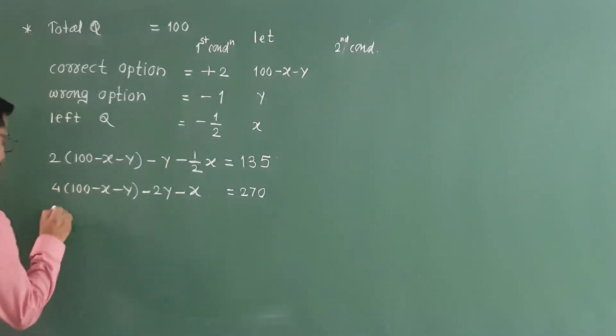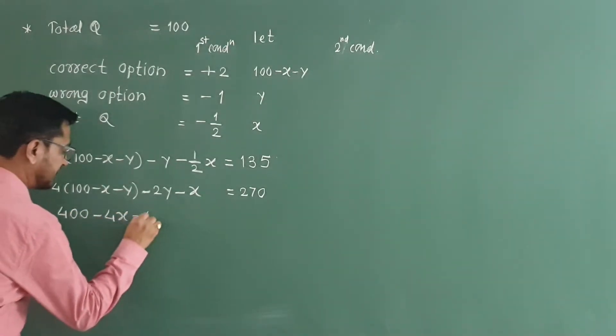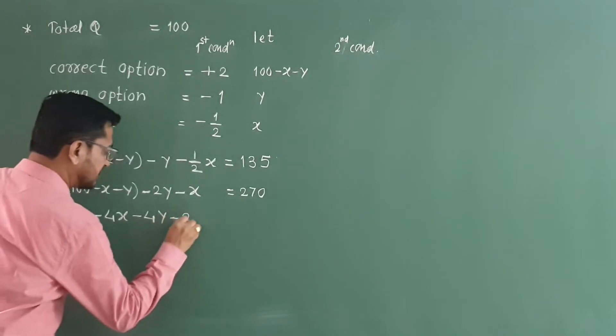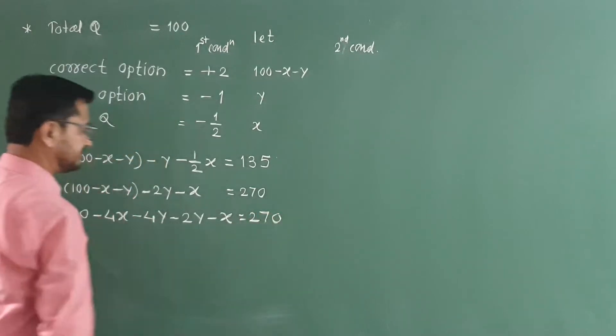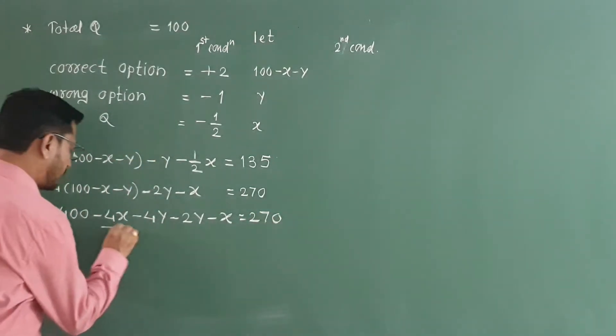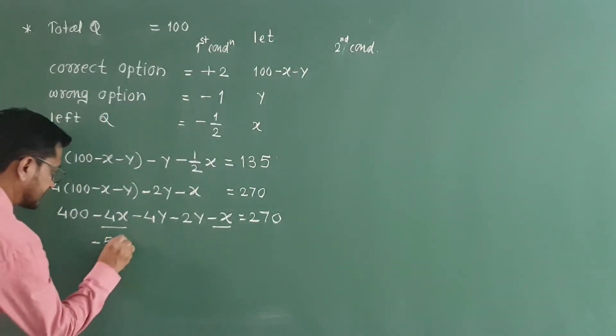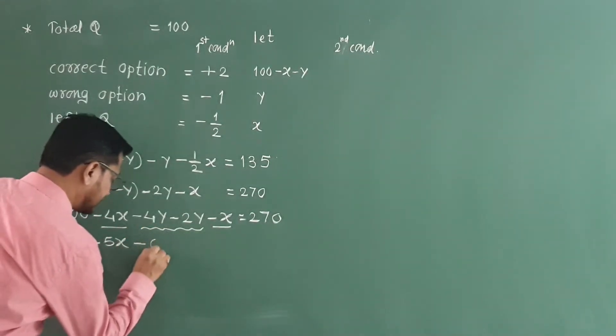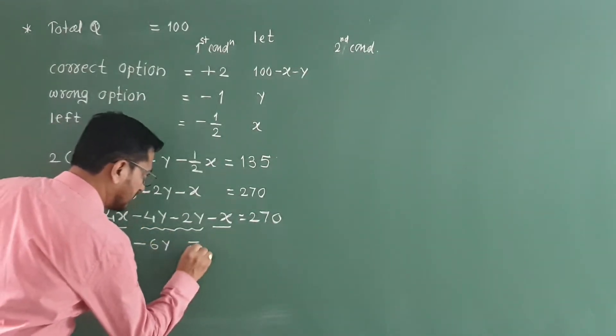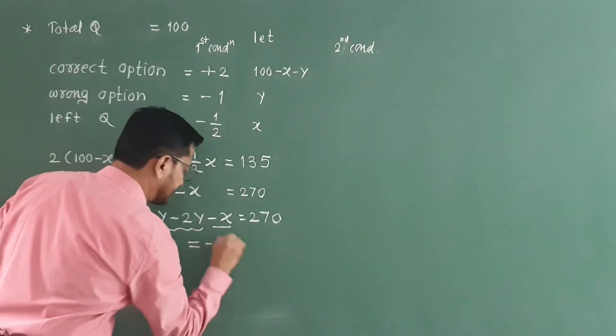Now multiply 4. 400 minus 4x minus 4y minus 2y minus x is equal to 270. Minus 4x minus x is nothing but minus 5x.